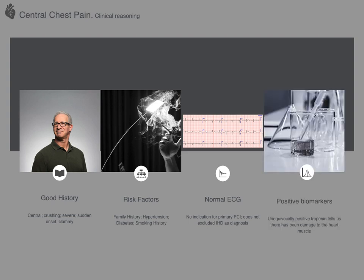We also know the patient has an unequivocally positive troponin cardiac enzyme. A lot of people will turn to the patient at this point and say they've had a heart attack — a myocardial infarction — but this isn't technically correct. All the positive biomarkers tell us is that there has been, to some degree, damage to the heart muscle. The mechanism of that damage we cannot be entirely certain of at this point. So, with this information, what are the top of your differentials?